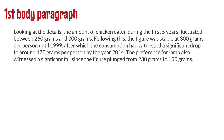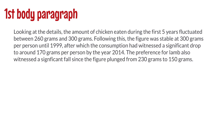So our first body paragraph would be written the following way: looking at the details, the amount of chicken eaten during the first five years fluctuated between 260 grams and 300 grams. Following this, the figure was stable at 300 grams per person until 1999, after which the consumption had witnessed a significant drop to around 170 grams per person by the year 2014. The preference for lamb also witnessed a significant fall, since the figure plunged from 230 grams to 150 grams.